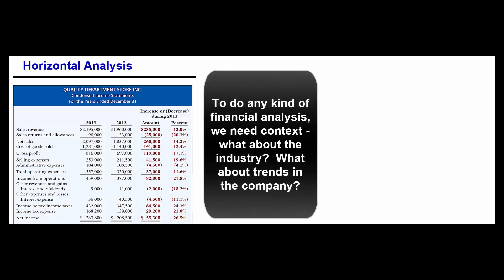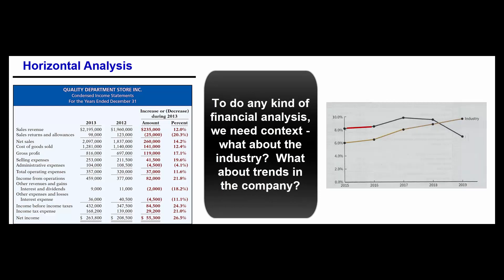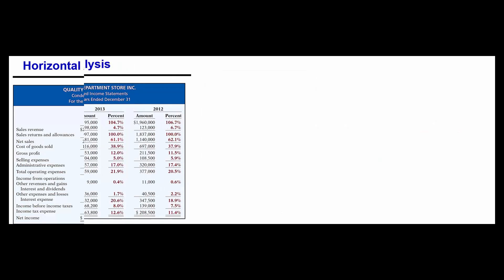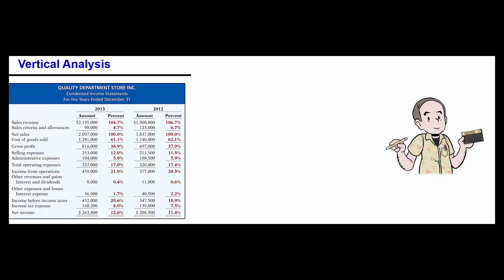But we really don't have enough information — we need to know what the rest of the industry was doing and what this company was doing in the years before. One number all by itself doesn't give us enough information; we need context about what the industry is doing and what the company has been doing.